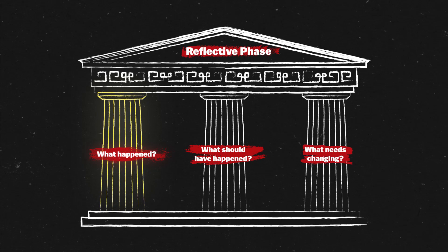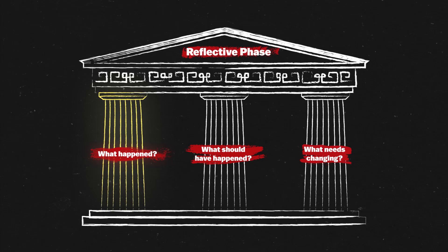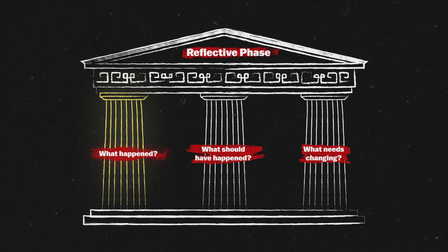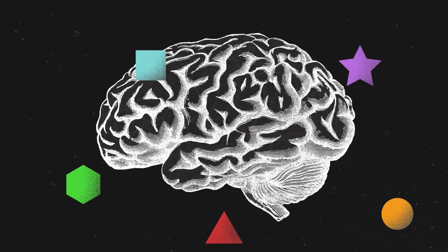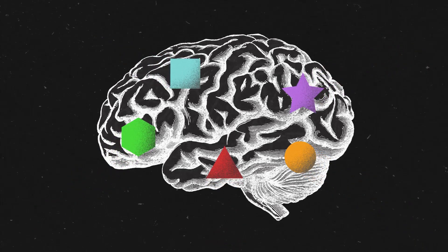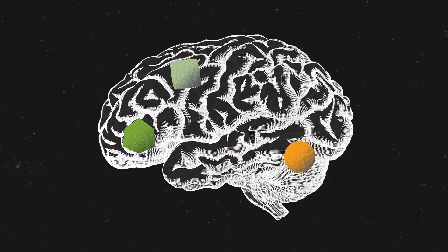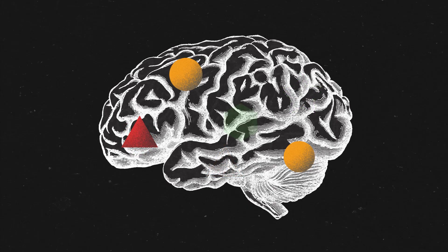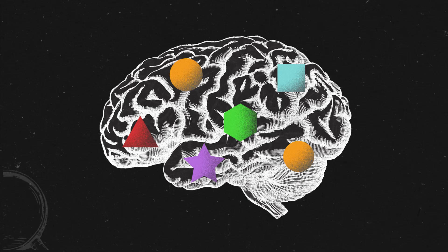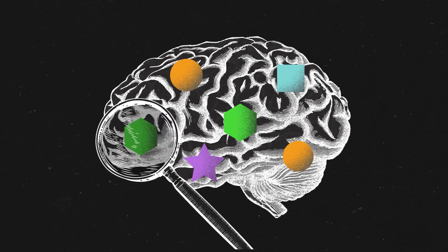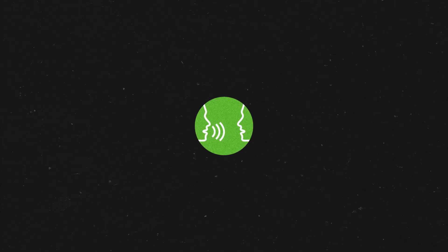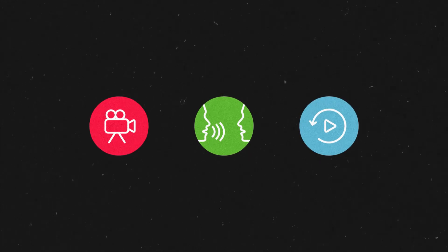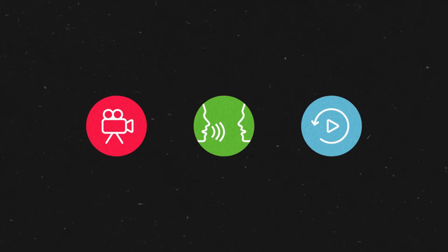Answering the first pillar might sound easy on the surface - just remember what happened in the game. Henry peeked aggressively, and that's that. The problem is that we're humans, and we fall into cognitive traps and biases all the time. Our brains forget or misremember things, and when they don't, they make up stories to rationalise our actions. It's vital, therefore, to remove as many subjective elements from our analysis as possible - whether that's through getting a second opinion, recording your games, or using the in-game replay system. Just use objective data wherever possible to minimise bias.